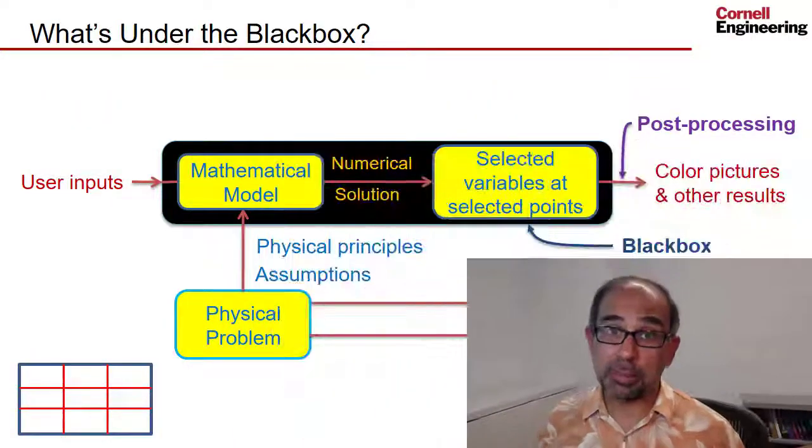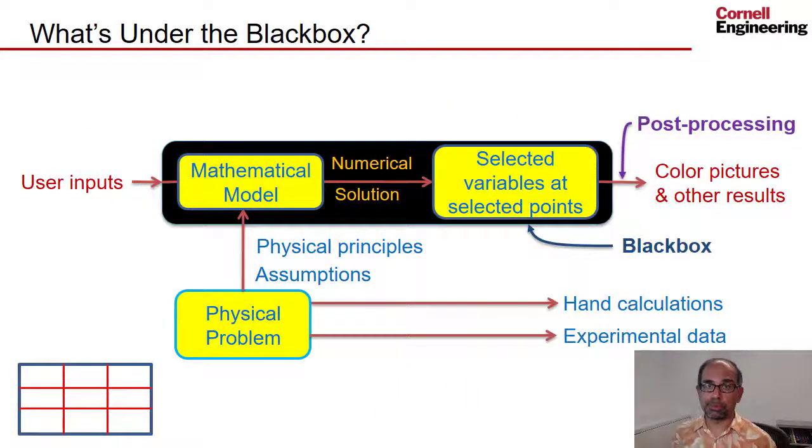We have looked at how the potential energy of the truss can be expressed in terms of the pin displacements, which is what we are after to find. Next, let's talk about how you can find the pin displacements such that the potential energy is minimum, because that's the equilibrium state.